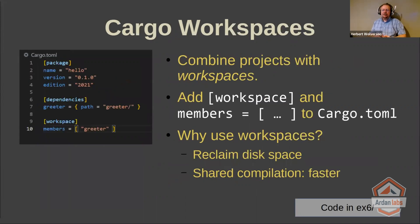The other thing you may have noticed, if you were looking at your file system tree when you compiled, is that greeter is now sitting in greeter/target/debug/greeter.lib, and your program is sitting in hello/debug/hello. The anyhow source code is in both locations, and the result is that you've used a whole bunch of disk space.